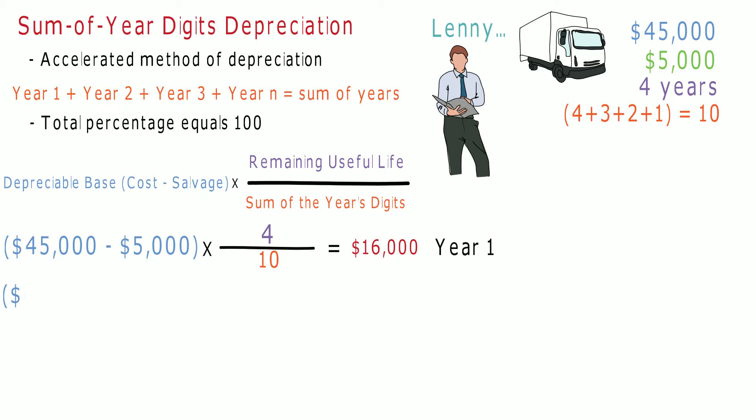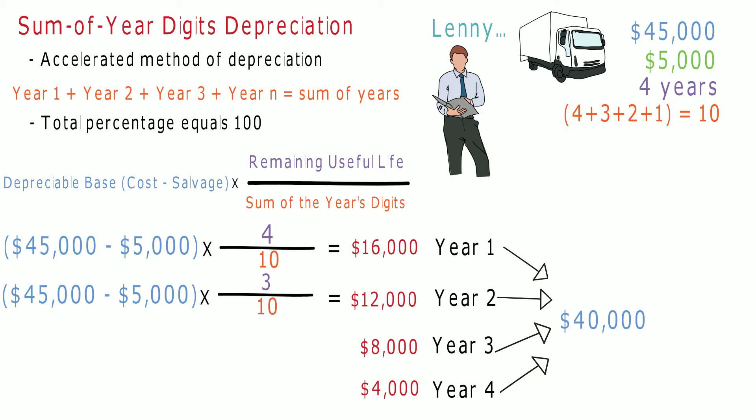We will then use the same equation, substituting the remaining useful life figure, to get year 2's depreciation value of $12,000. This will continue until the depreciation value is equal to the depreciable base at the end of the asset's useful life.